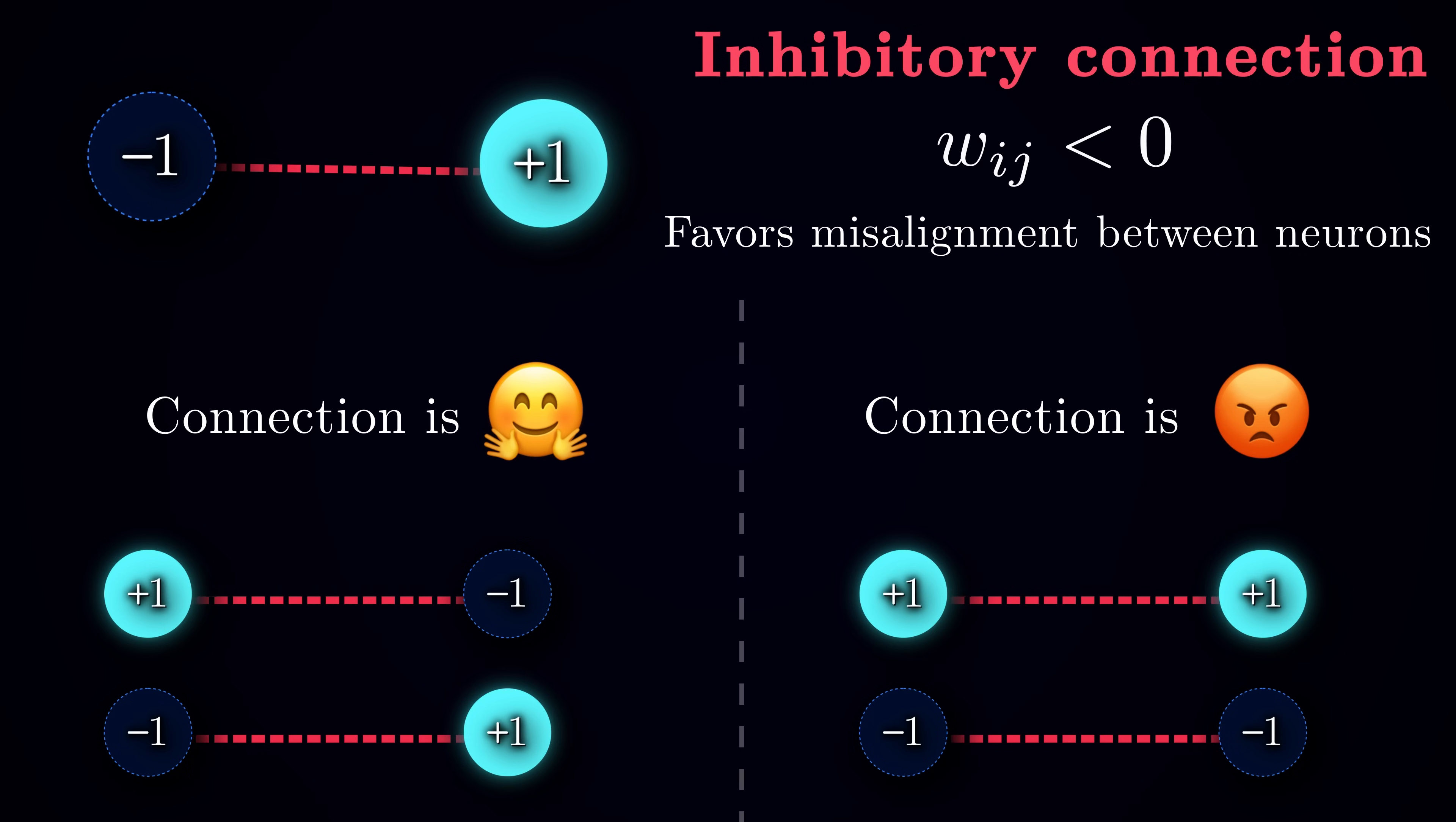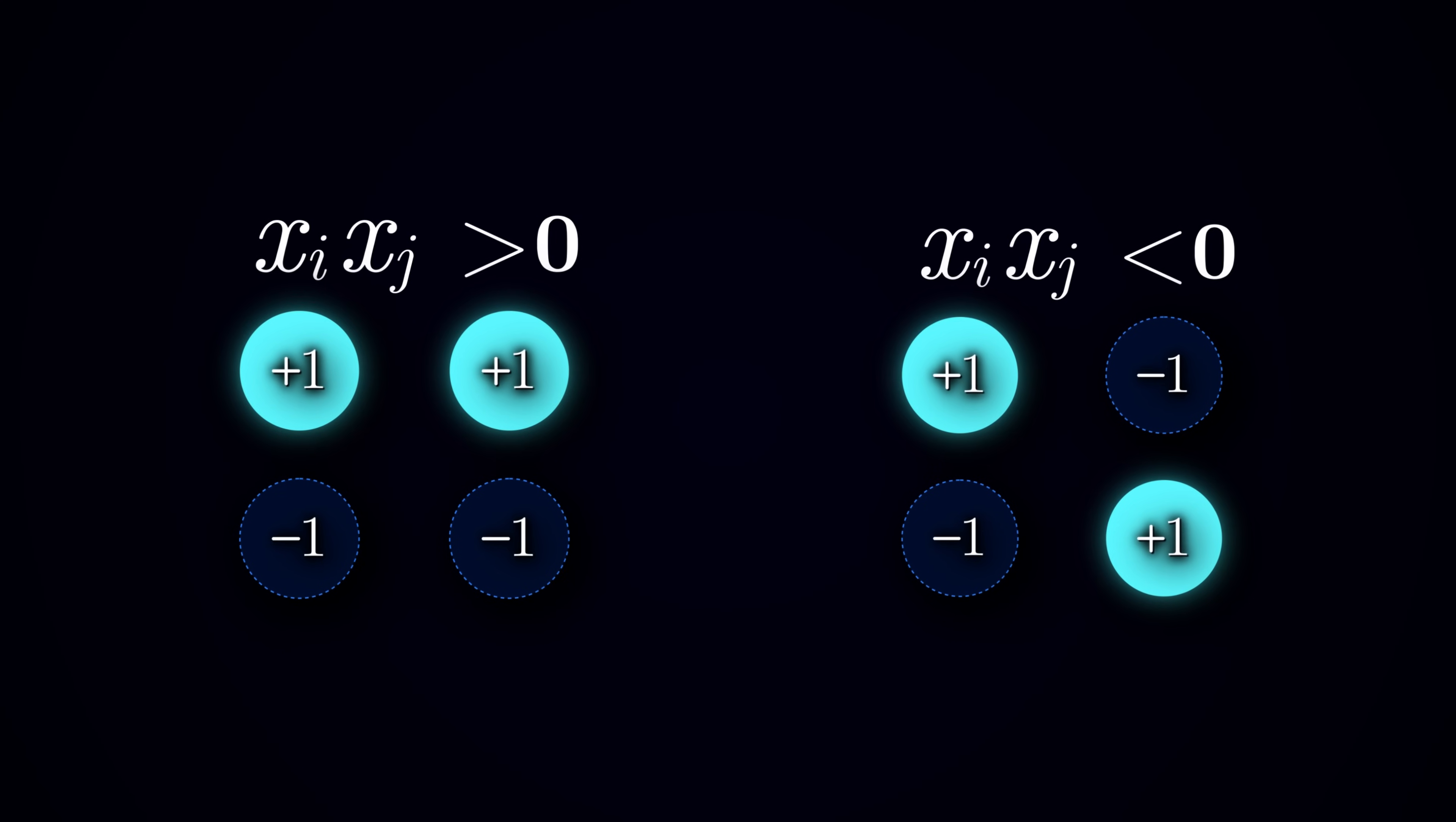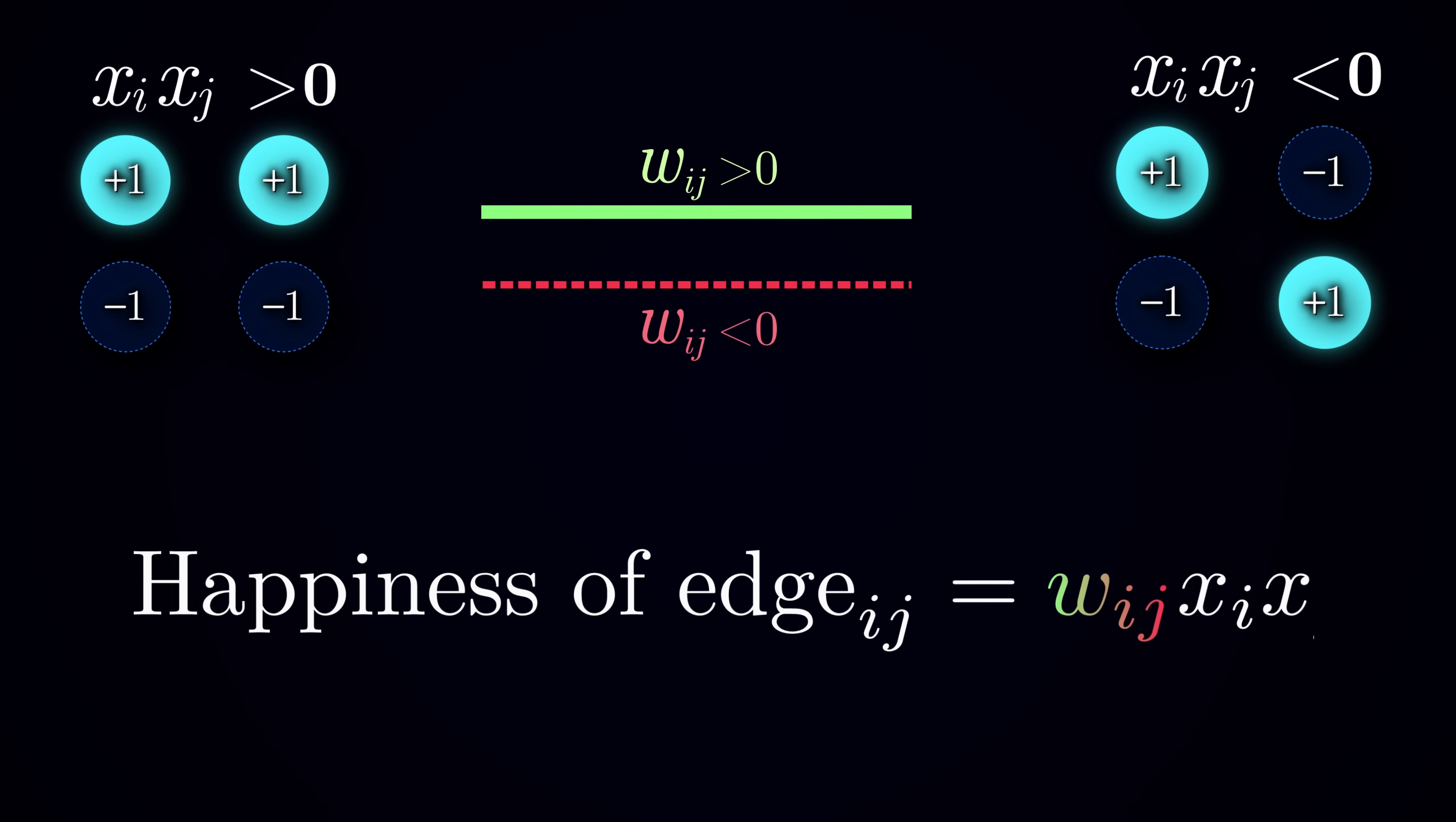This alignment between the signs can be expressed more concisely using the product xi times xj. This product will be positive when both neurons have the same sign and negative when they have different signs. By multiplying this product further by the connection weight, we obtain an expression for the happiness of that connection. For a positive wij, happiness will be positive when the product of the two states is positive.